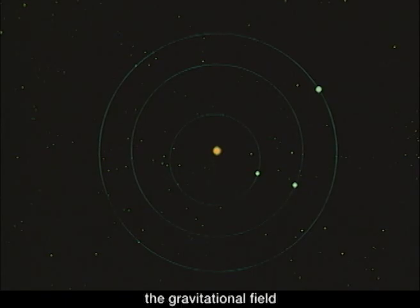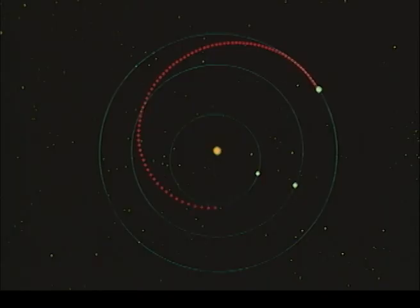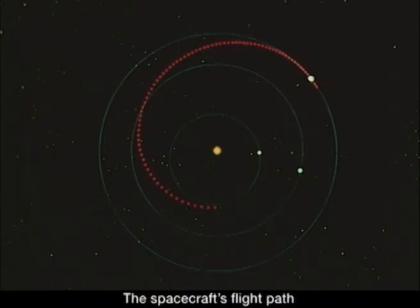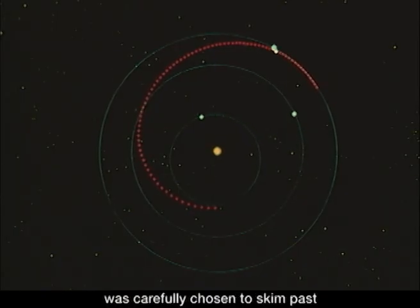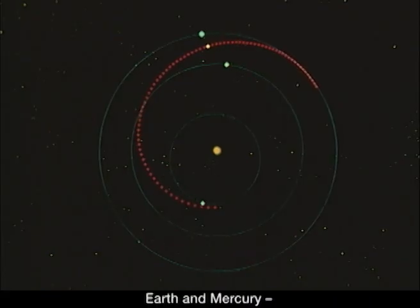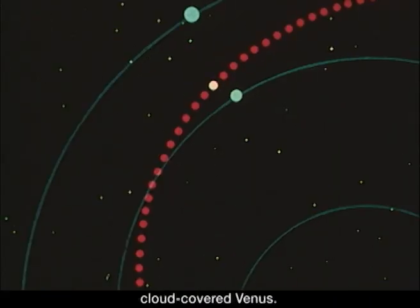After leaving the gravitational field of Earth, Mariner 10 began its long voyage to Mercury. The spacecraft's flight path was carefully chosen to skim past the planet orbiting between Earth and Mercury, cloud-covered Venus.